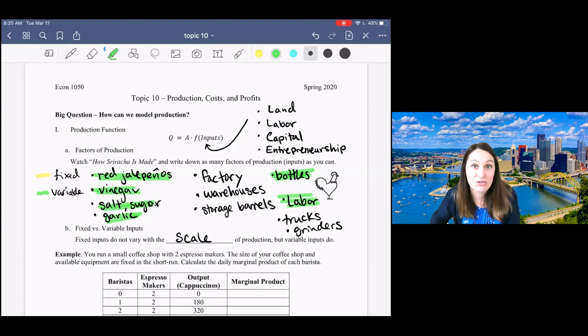And we probably will need more labor or at least more hours of labor to produce that Sriracha. But we're not necessarily going to need a whole new factory or a second warehouse just to make 100 extra bottles of Sriracha. Now, if we really wanted to increase scale a lot, we might need another factory. So not necessarily that one type of input would always be fixed or always be variable. I think factories, warehouses, storage barrels, trucks, and the equipment is probably fixed.